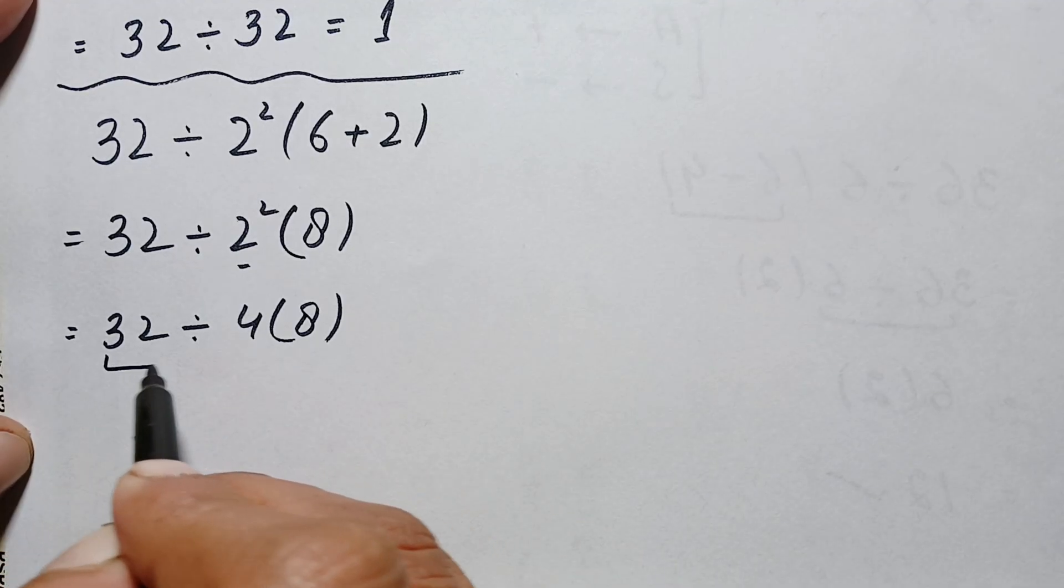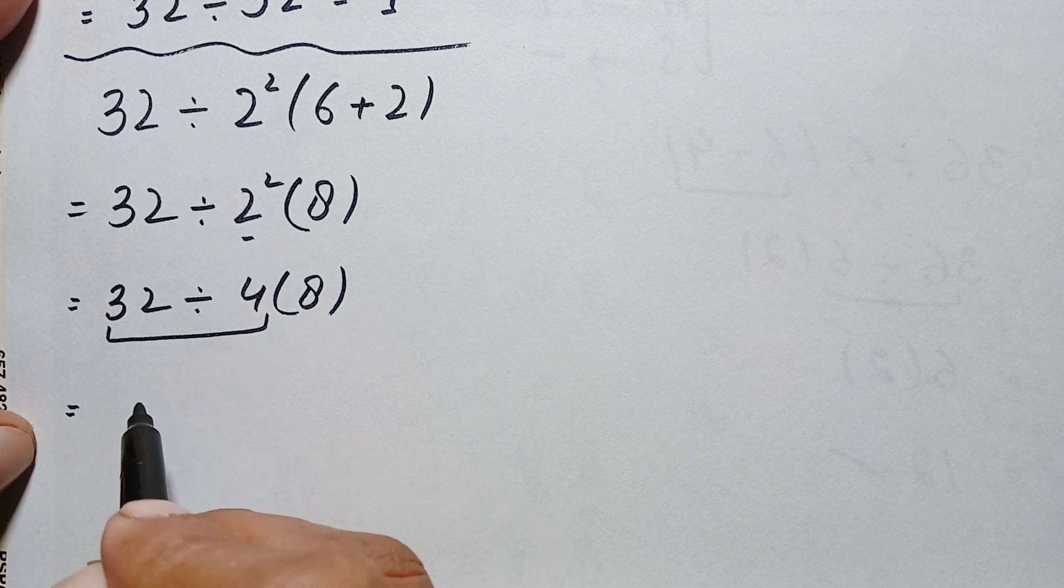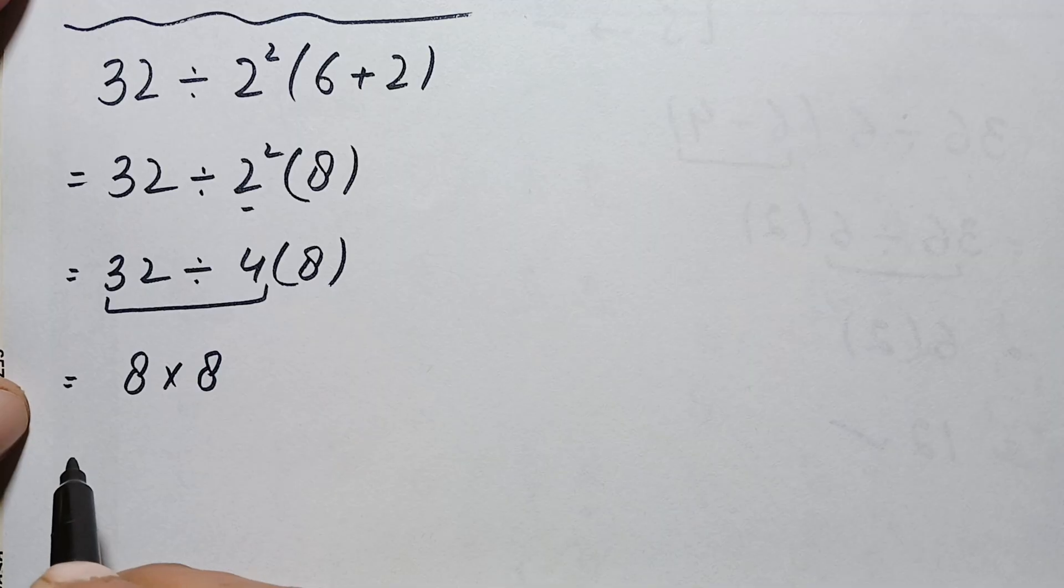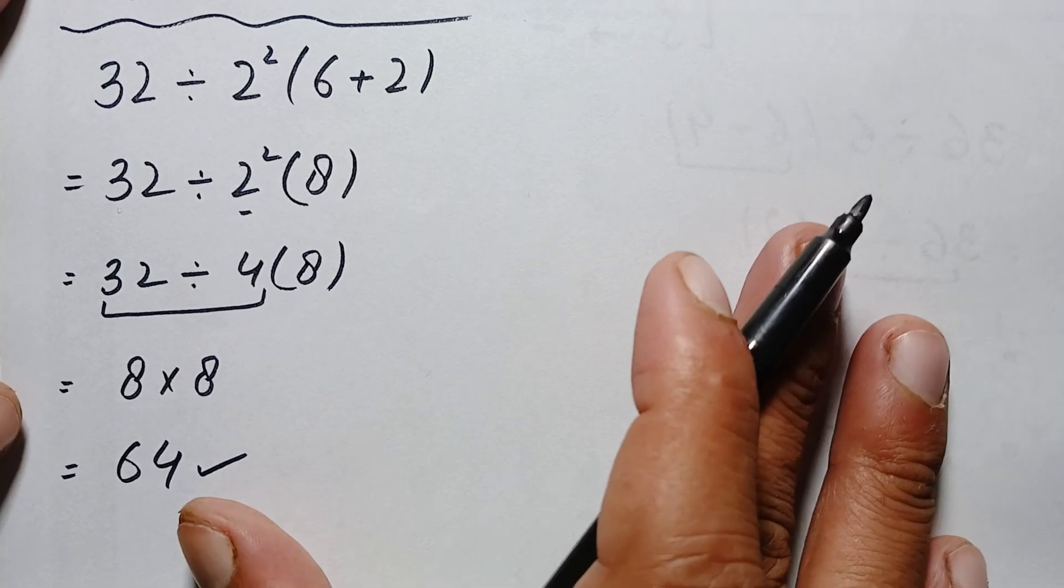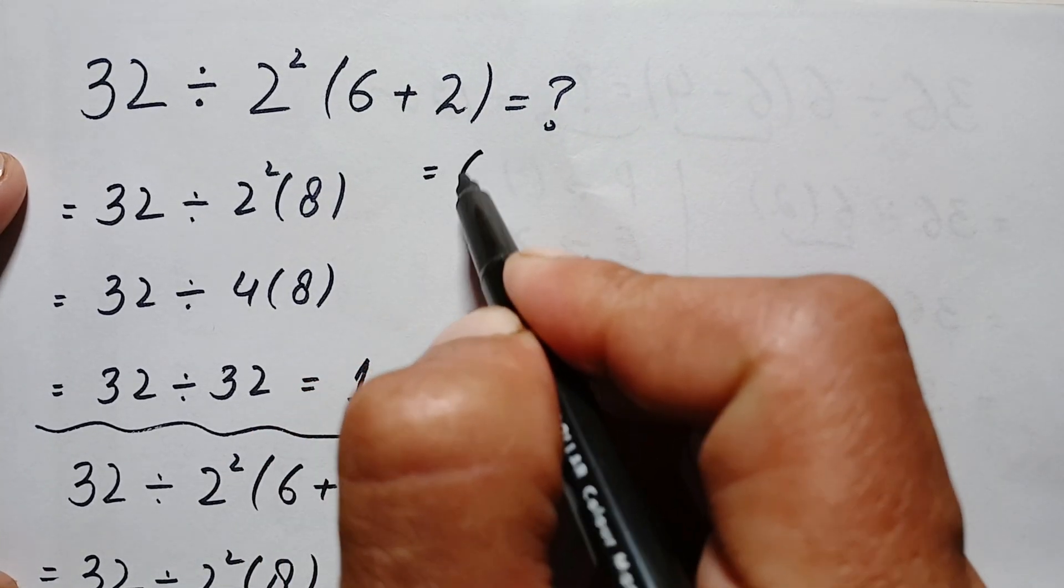So here, 32 divided by 4 is simply 8 times 8, and 8 times 8 is 64. And this is our answer. So finally, the correct answer of this problem is simply 64.